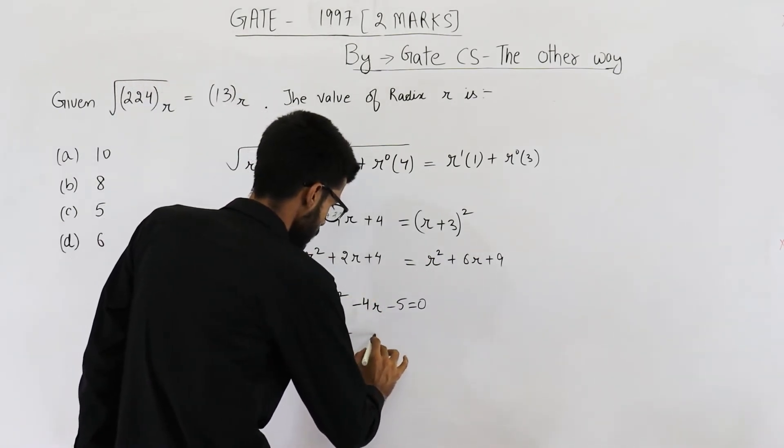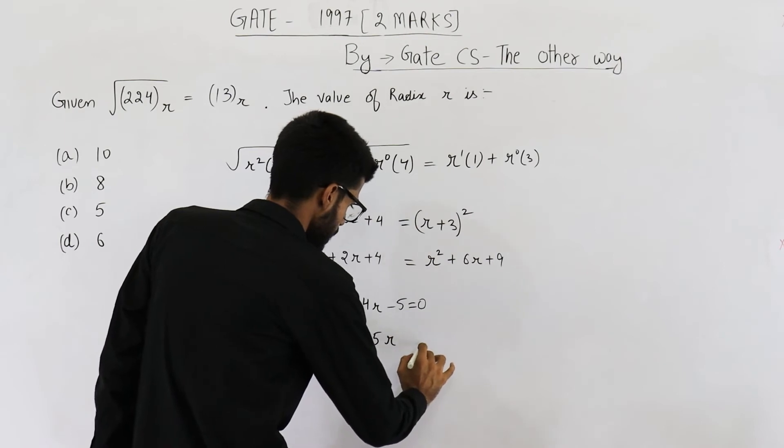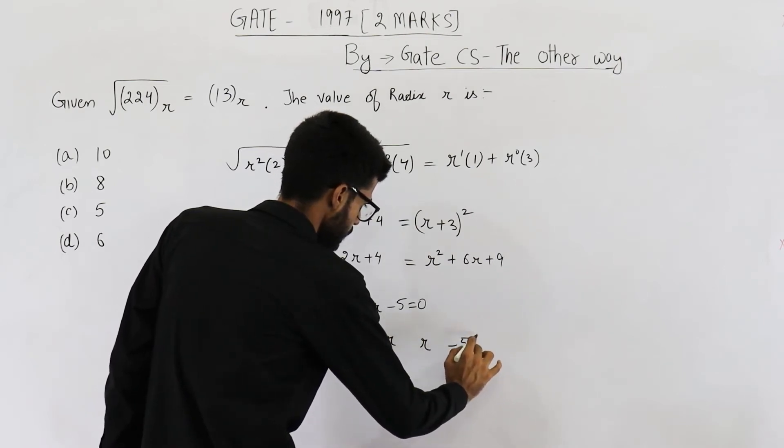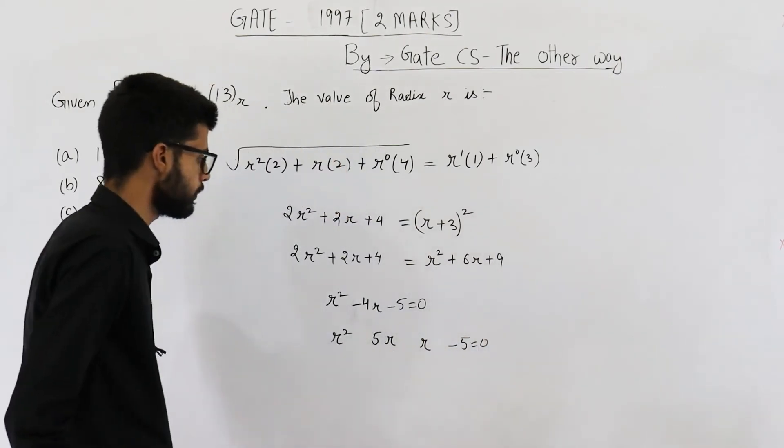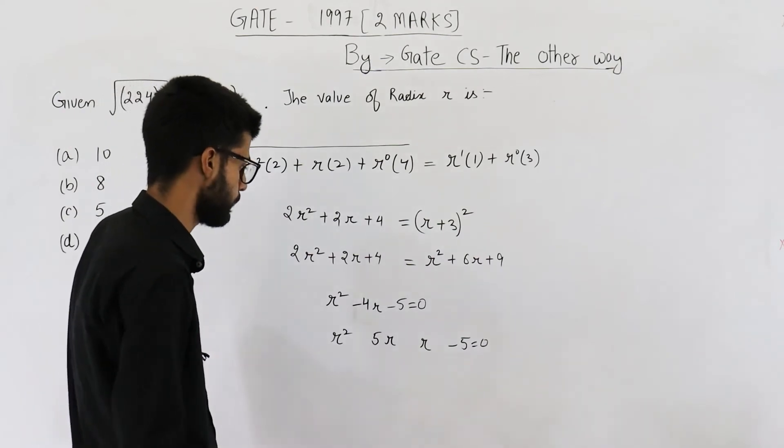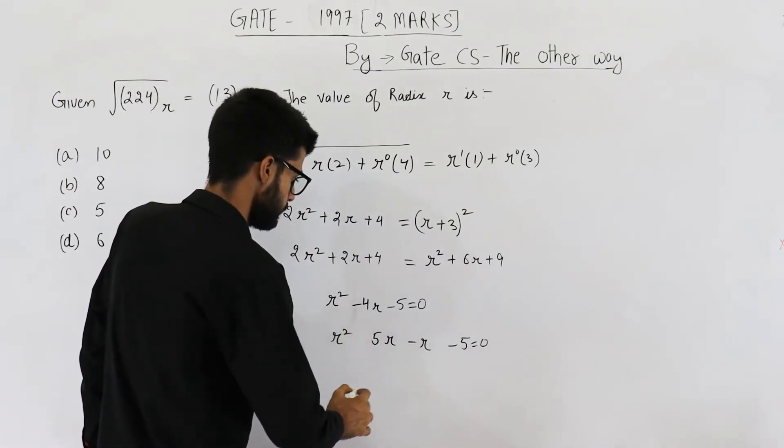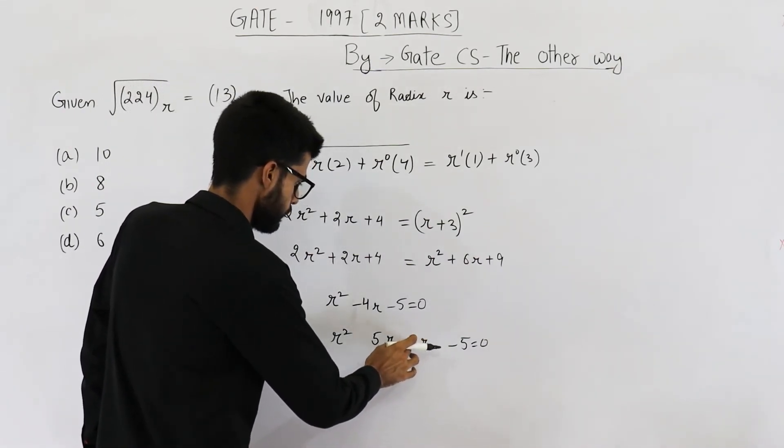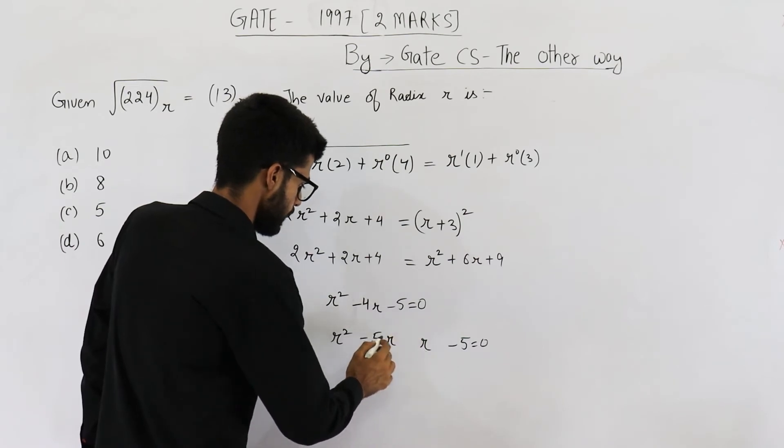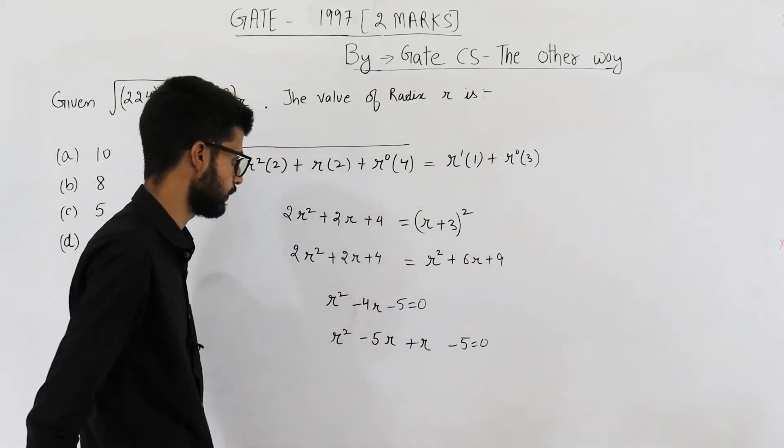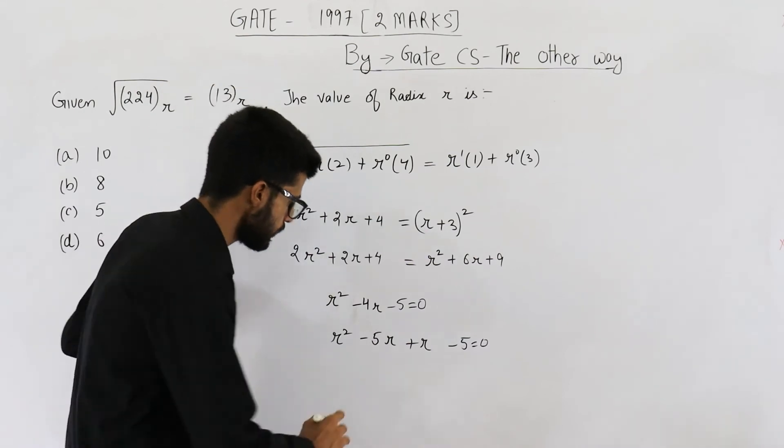r square, 5r and r minus 5 is equal to 0, so the sign will be negative here, negative here and positive here. Yeah, so take r common from here.